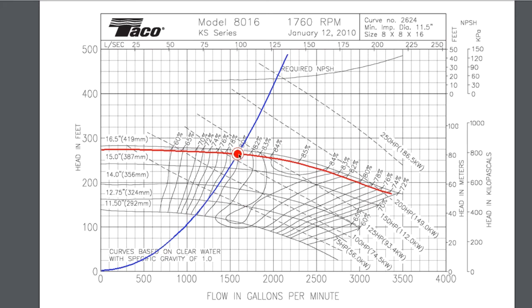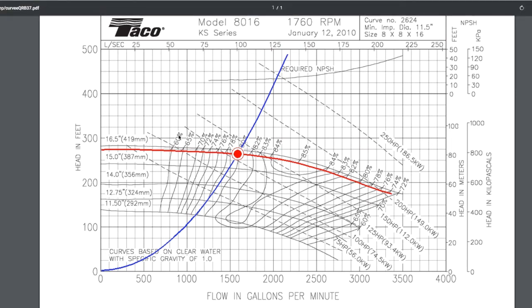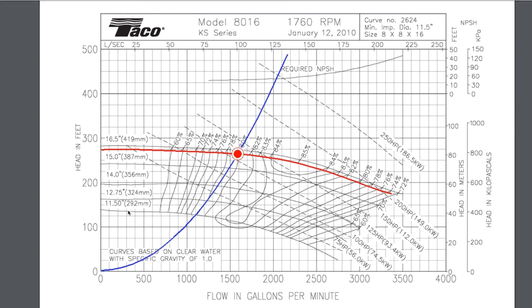The red point is our operating point. Looking at the rated curves, we can take the same model 8016 pump and put different sized impellers in it. The bigger the impeller diameter, the more flow you get for a given head, or the more head at a given flow. So we can choose between 16.5 inch, 15 inch, 14 inch impellers, and so on, each giving different head-flow performance.